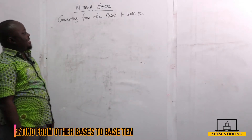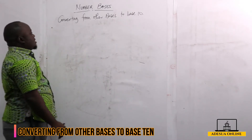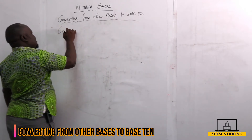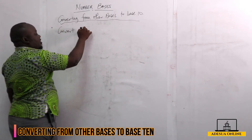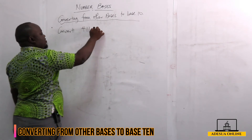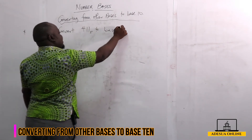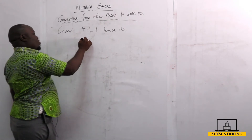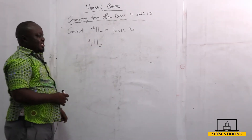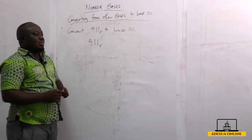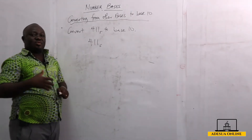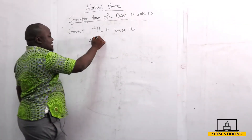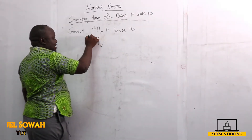We want to convert from other bases to base 10. So, convert 411 in base 5 to base 10. To do this, we label the digits with their positional indices from right to left: 0, 1, and 2 on top of the digits 1, 1, and 4 respectively.